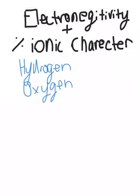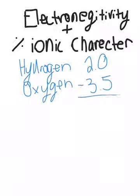The electronegativity for hydrogen is 2.0, and for oxygen is 3.5. You can find this on the back side of the periodic tables we have in class on the top right corner. Now, we are going to subtract the 2 and get 1.5.